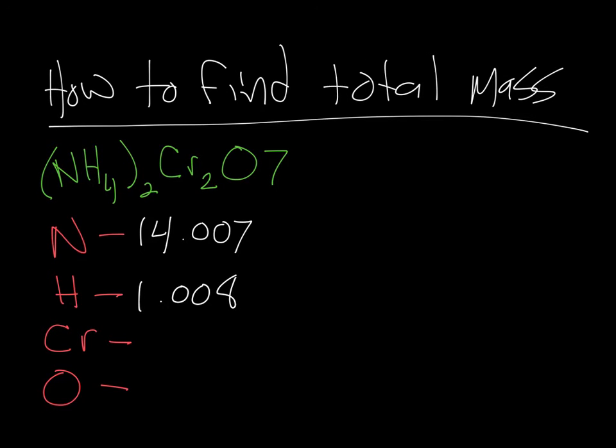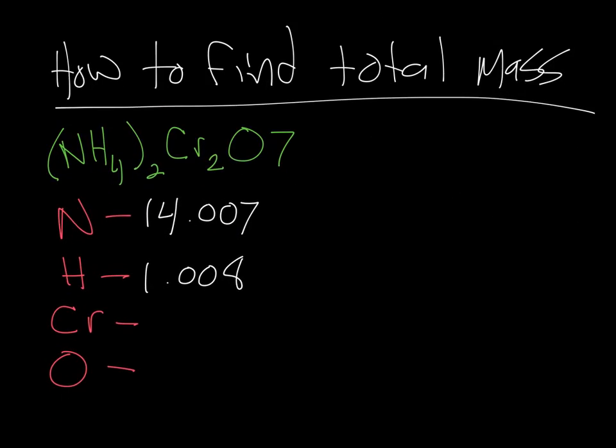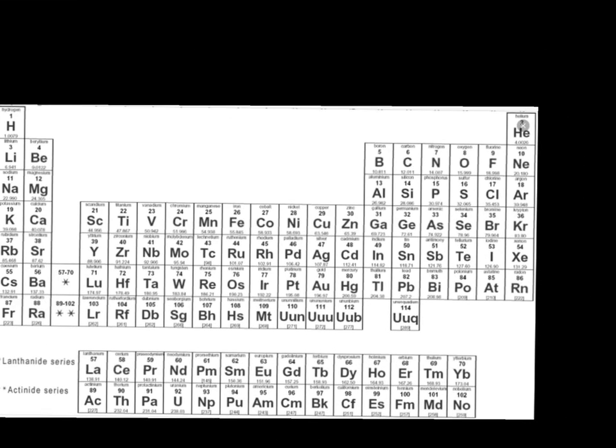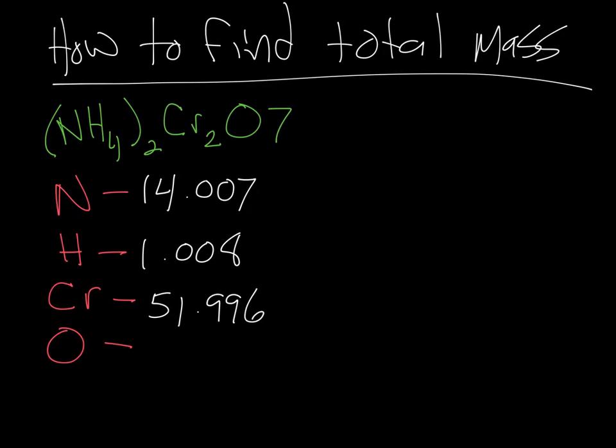Then we have chromium. So we come back to our periodic table and we find chromium is right here, 51.996. So we go back and we write 51.996. Sorry, I just had a complete loss of brain function. And then we do oxygen. Oxygen is 15.999.